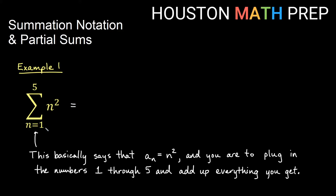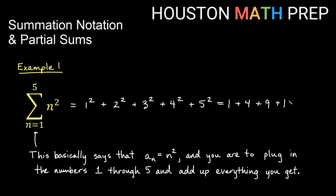For example, summing n squared from n equals 1 to 5 means we plug in 1 through 5 into the formula n squared and add everything up. So we get 1 squared plus 2 squared plus 3 squared plus 4 squared plus 5 squared, which is 1 plus 4 plus 9 plus 16 plus 25. Adding all those gives us 55. This sigma notation is saying we're summing up the first five terms — another way to express a partial sum.